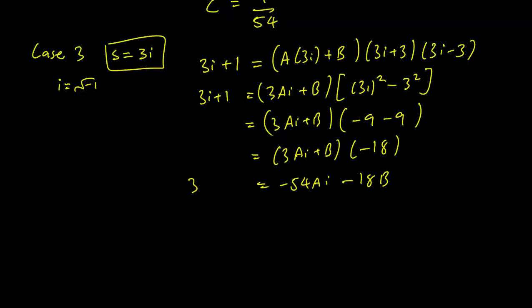We can multiply that out to get minus 54Ai minus 18B. So we have to just match the terms with i and the terms without i. This implies that 3 equals minus 54A, so A is equal to minus 1 over 18. And 1 equals, these are the terms without i, 1 equals minus 18B. So B is equal to minus 1 over 18.